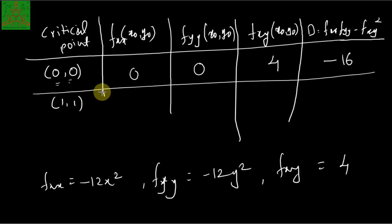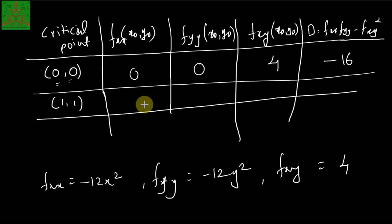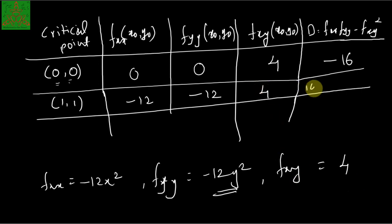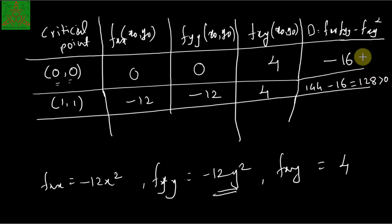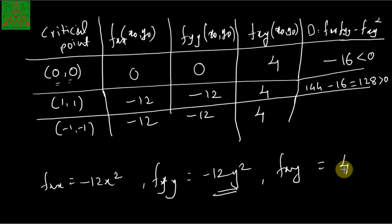At (1, 1): fxx is minus 12, fyy is also minus 12, and fxy is 4. So D equals (minus 12)(minus 12) minus 4 squared, which is 144 minus 16, giving 128, which is positive. At (minus 1, minus 1): fxx is minus 12, fyy is minus 12, and fxy is 4. D equals again 128, which is positive.